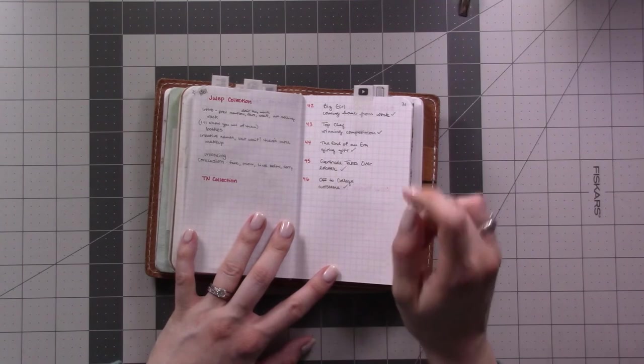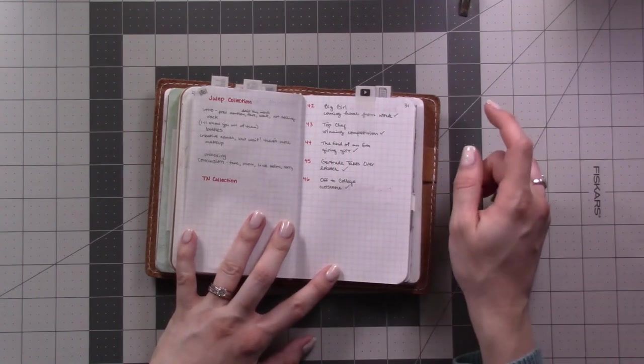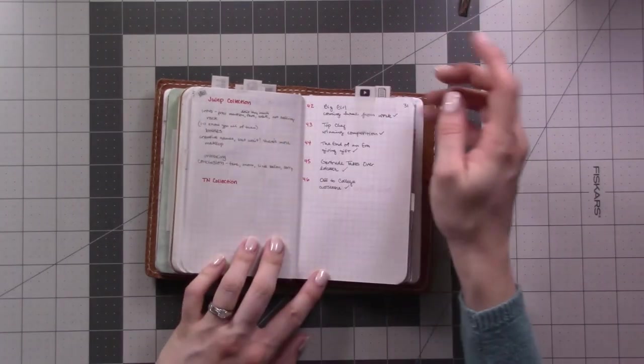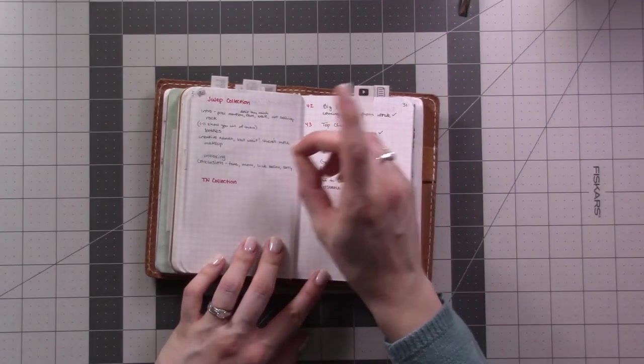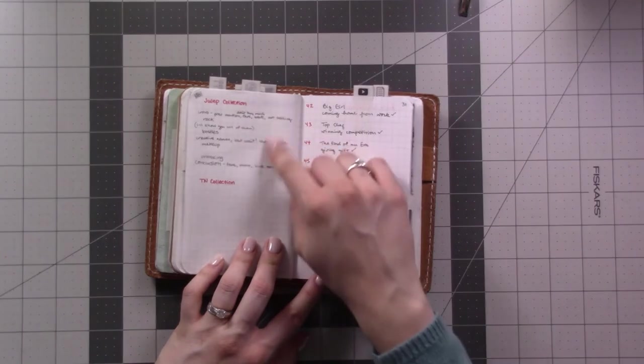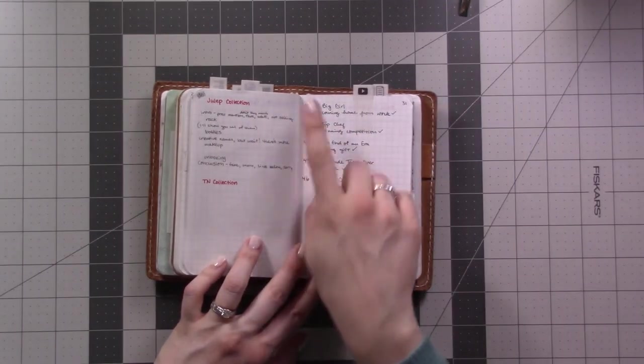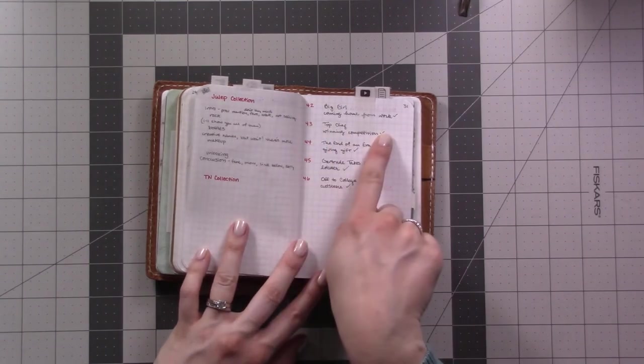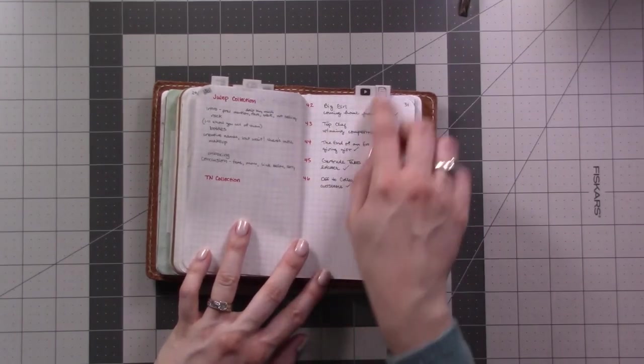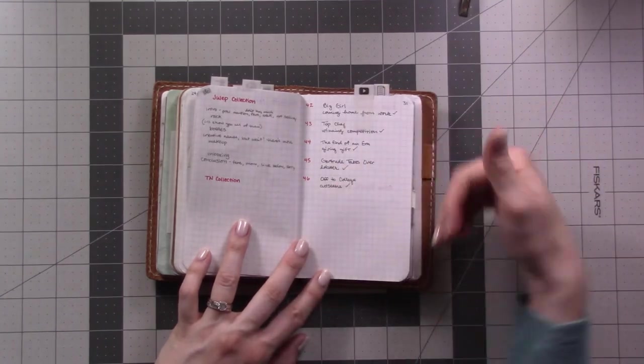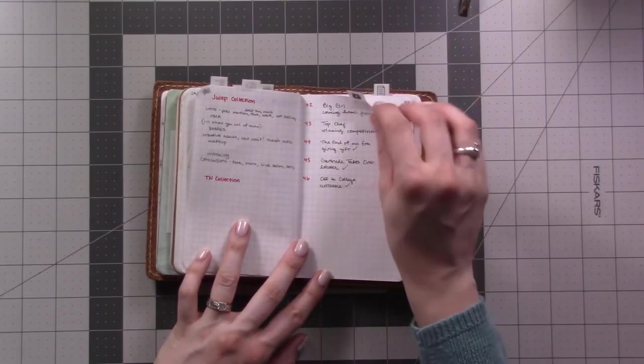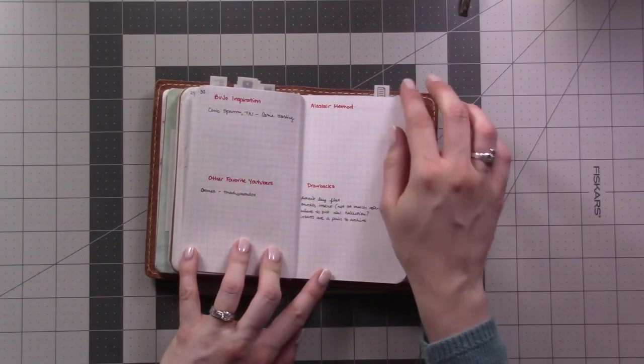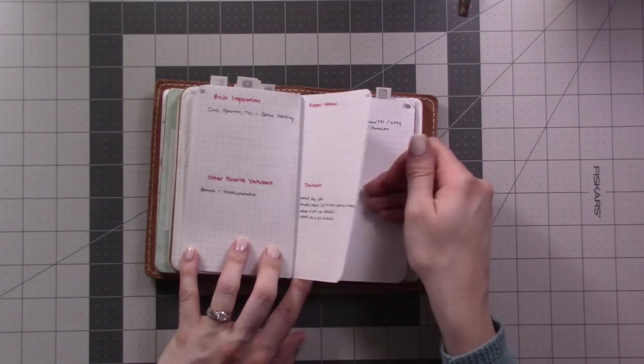These next few pages are YouTube video project pages. They're sort of like half a page. Some of these did not get filled out before I stopped using this insert. These were for iSpy videos, so I wanted to write down the title and what the thumbnail image should be as I finished recording, so I wouldn't have to go back and pick those later.